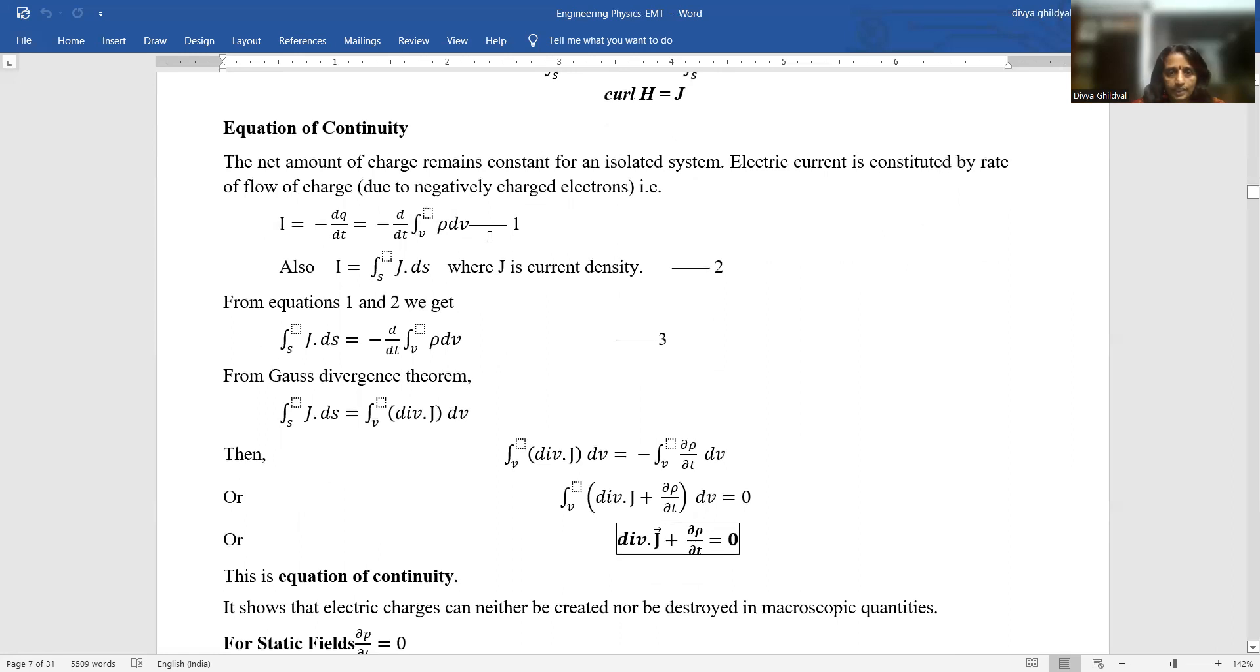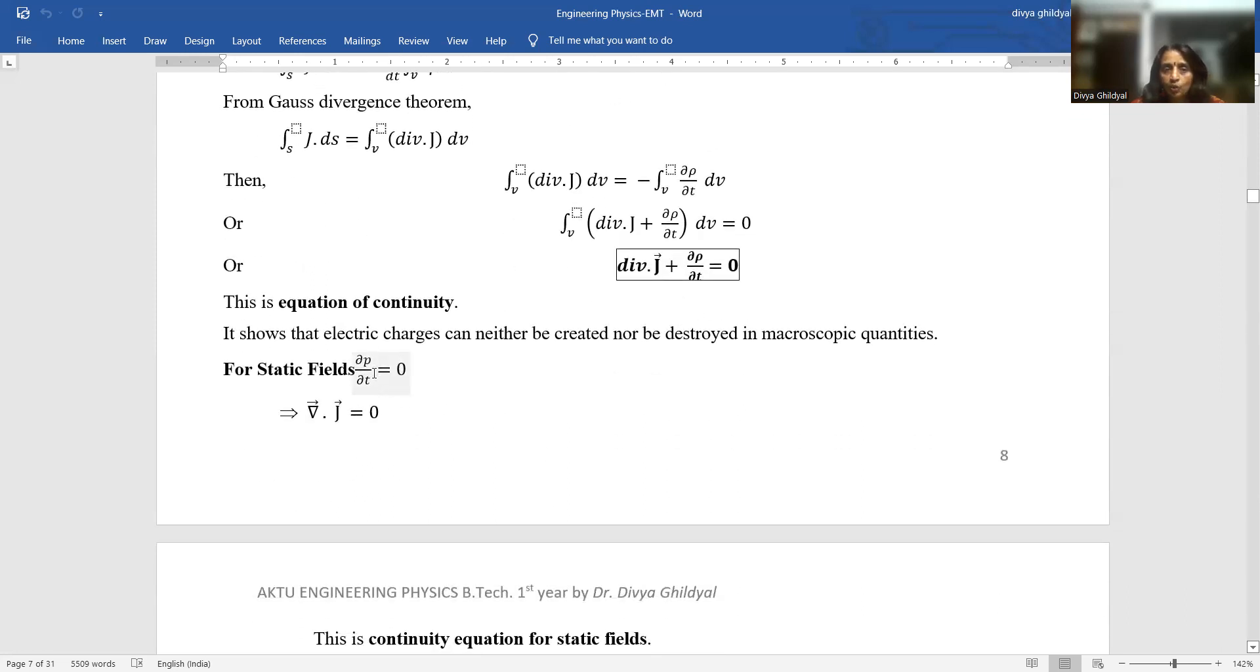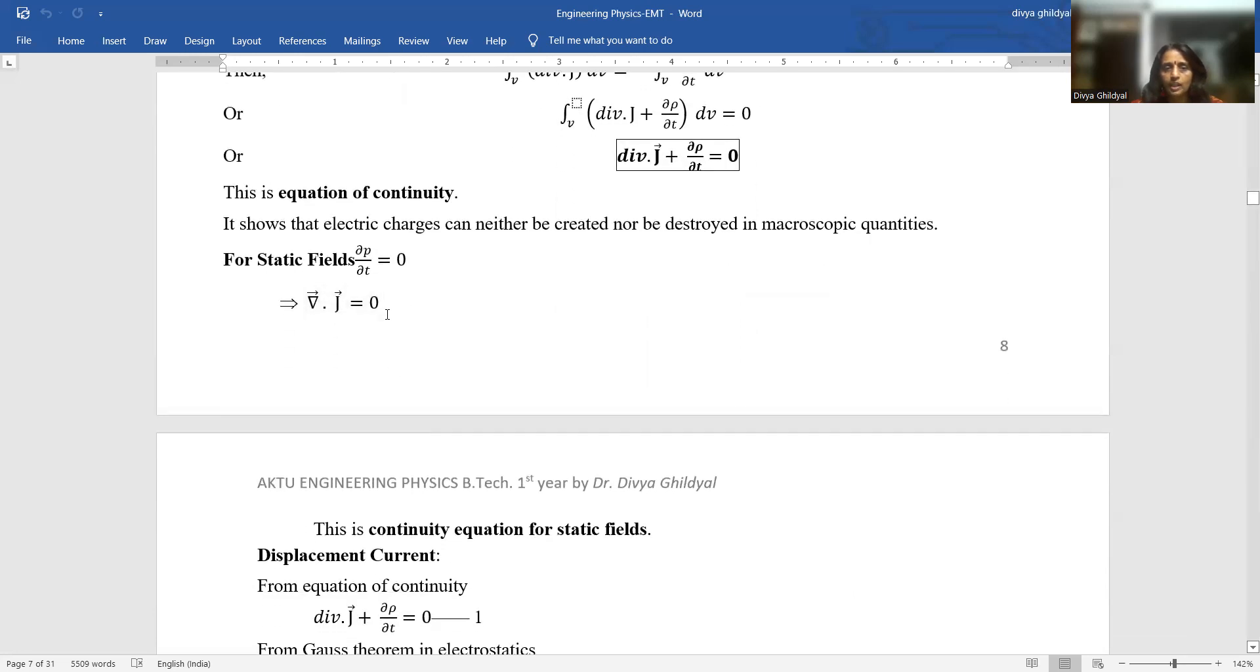Now I equated both these equations and here I have got the equation for continuity, which is written as divergence J plus del rho by del T equal to 0. This is known as equation of continuity. It shows that charges, electric charges can neither be created nor destroyed but they are remaining conserved equal to 0. For static field where there is no motion, everything is at rest, del rho upon del T will become 0 and your expression reduces to del dot J equal to 0. So this is continuity equation for static fields.